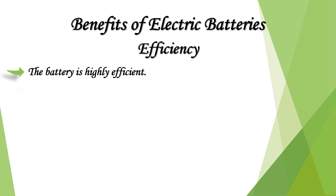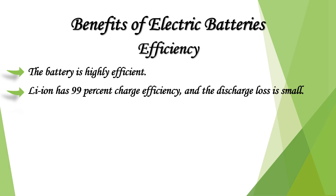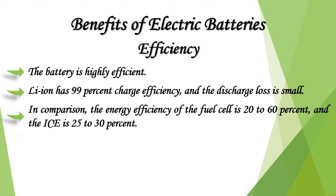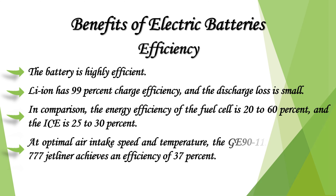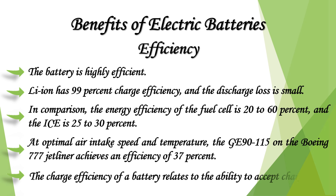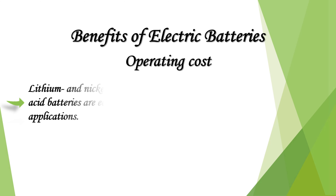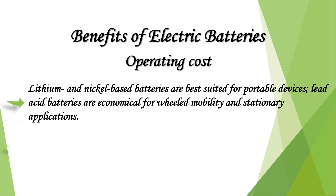The battery is highly efficient, with nearly 99% charge efficiency and low discharge loss. In comparison, the energy efficiency of a fuel cell is 20 to 60%, and the internal combustion engine is 25 to 30% at optimal air intake speed and temperature. The GE90-115 on the Boeing 777 jetliner achieves an efficiency of 37%. The charge efficiency of a battery relates to its ability to accept charge.